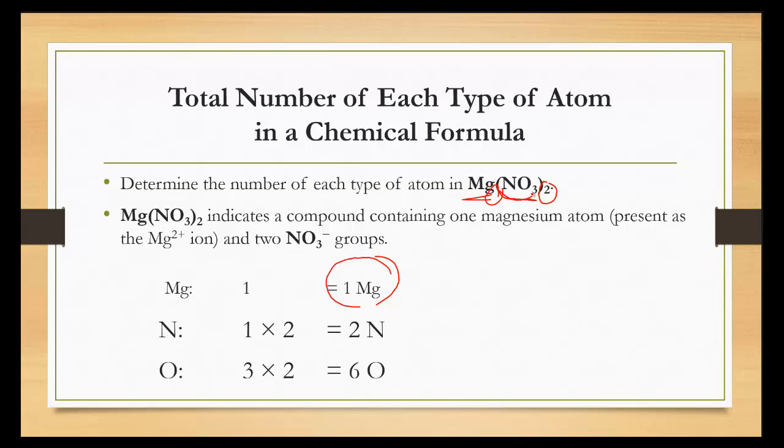We have two of the NO3 groups within the parentheses. So, the subscript for nitrogen is 1. 1 times 2, we have 2 nitrogens here. We do the same thing with the oxygen. 3 times 2 to give us 6 oxygens.